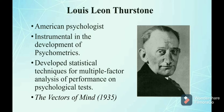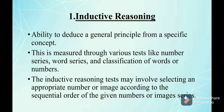Let's look into the descriptions of these seven primary mental abilities and how they can be tested. The first one is inductive reasoning — the ability to find rules or logical reasoning. It is the ability to find general rules and principles from given information, and involves the ability to deduce a general principle from a specific concept. This ability is measured through tests like number series, word series, and classification of words or numbers, which may involve selecting an appropriate number or image according to the sequential order of a given series.